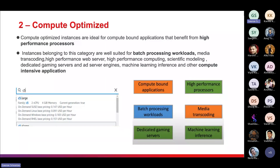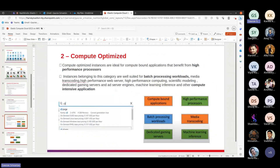The second category is compute optimized. If you want to create a machine learning interface or develop a high-performance processor application, you can use compute optimized. These instances are ideal for compute-bound applications that benefit from high-performance processing, such as batch processing workloads, media transcoding, high-performance web servers, scientific modeling, and dedicated gaming servers.